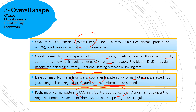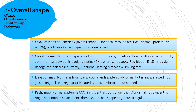The abnormal pachymetry patterns are hot concentric rings, horizontal displacement, dome-shaped, bell-shaped, globus, and irregular. These are all the normal and abnormal patterns on the curvature, elevation, and pachymetry maps. Out of these, we will be describing the cool uniform, cool symmetrical bow tie, hot symmetrical bow tie, cool island pattern, hot tight ends, skewed hourglass, embryo, and donut shapes on elevation maps, as well as CCC rings and hot concentric rings on pachymetry maps.